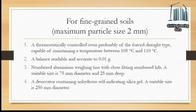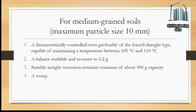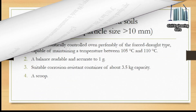Apparatus for medium grained soils: a thermostatically controlled oven, preferably of the forced draft type, capable of maintaining a temperature between 105°C and 110°C; a balance readable and accurate to 0.2 grams; and a suitable airtight corrosion-resistant container of about 400 grams capacity, plus a scoop.